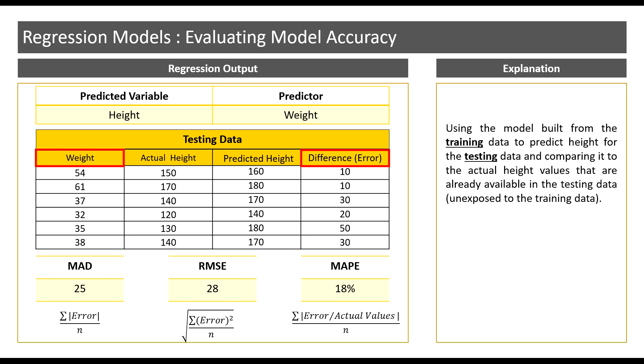So how do we interpret these measures? I predicted height here. I know that height is in centimeters. Therefore, values such as MAD and RMSE will also be in centimeters, as these error measures are on the same scale as the predicted variable. So when we say that the MAD is 25 here, it suggests that next time when I use this model to predict height, I may be off by roughly 25 centimeters.